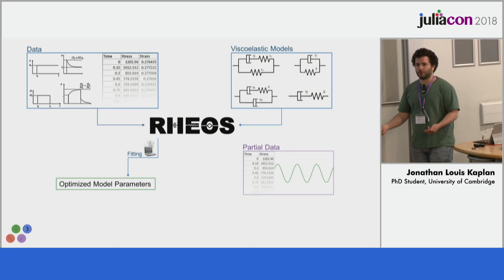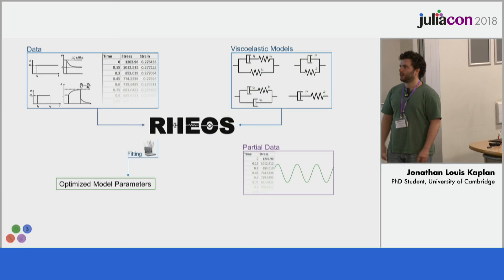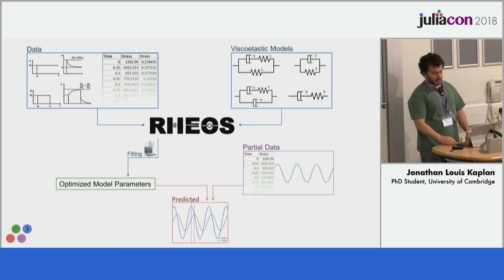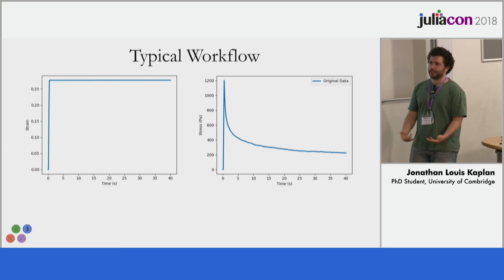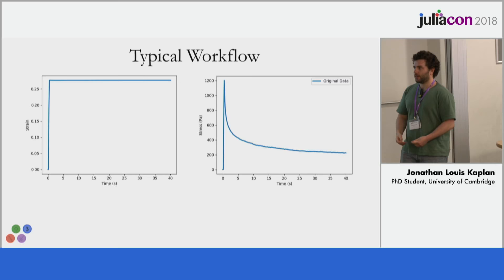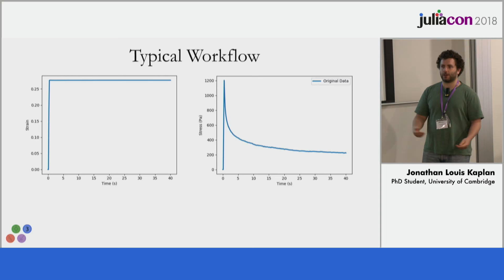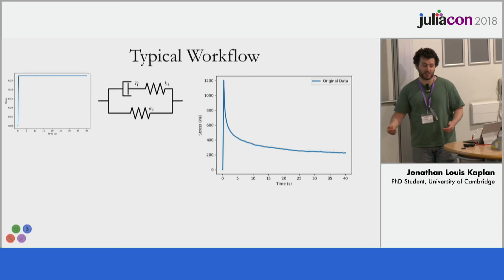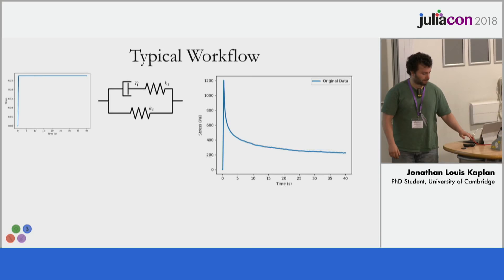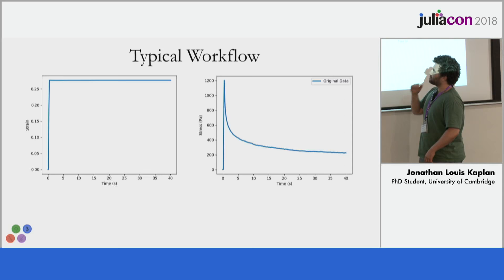Sometimes you might want to do a fit-and-predict, which for machine learning people is analogous to testing against a validation set. One of the big aims of RHEOS is to make it easy to use. Biologists particularly, over the last 10 to 20 years, are increasingly realizing how useful it is to understand the mechanical properties of biological materials. So it's got to be easy — hopefully when you see the code you'll agree, but please do give me feedback.